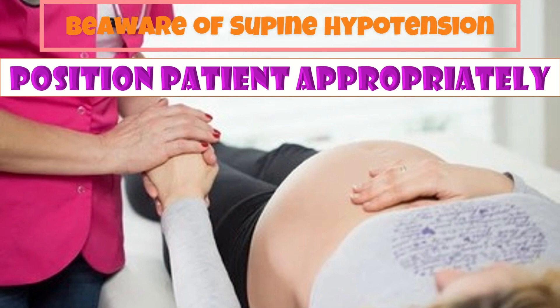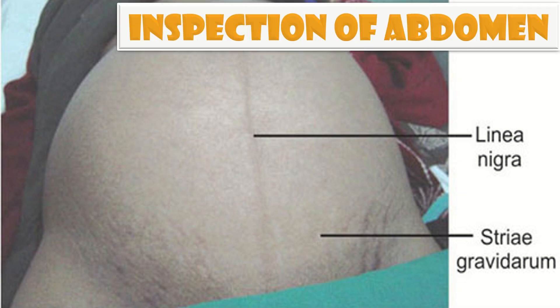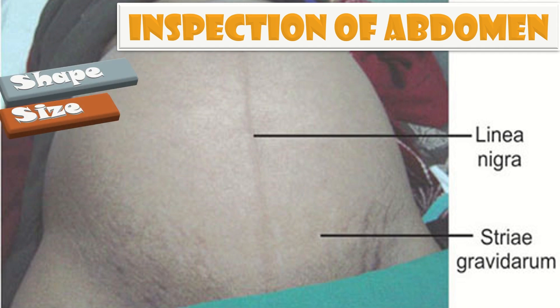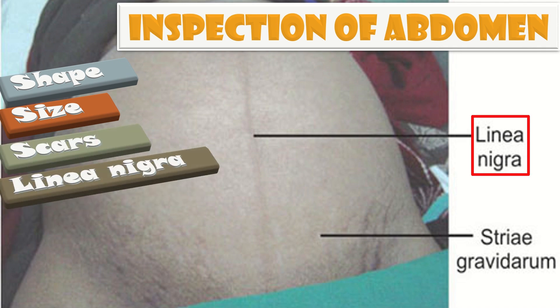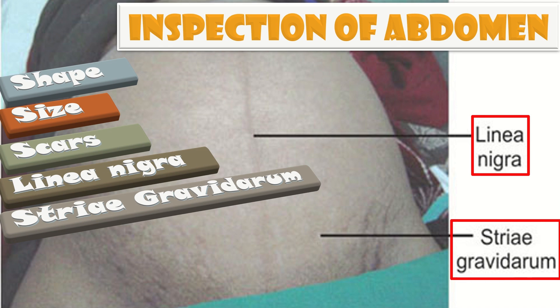After appropriate patient positioning and exposure, we start our examination by inspection. Inspect the abdomen for shape, size, visible scar marks of previous surgeries, linea nigra — which is a dark line of the skin down the middle of the abdomen — and striae gravidarum, which are linear purple-red lesions on the abdomen of the pregnant lady.